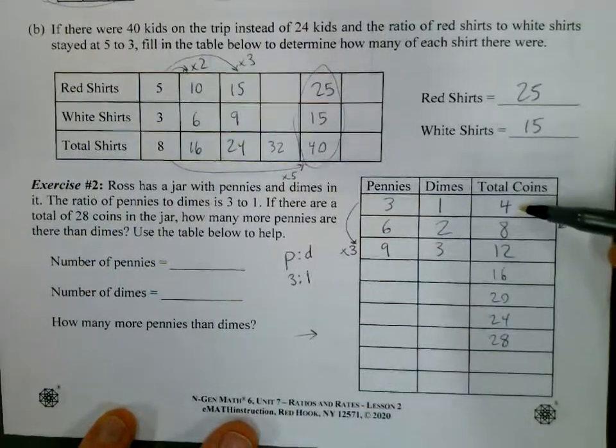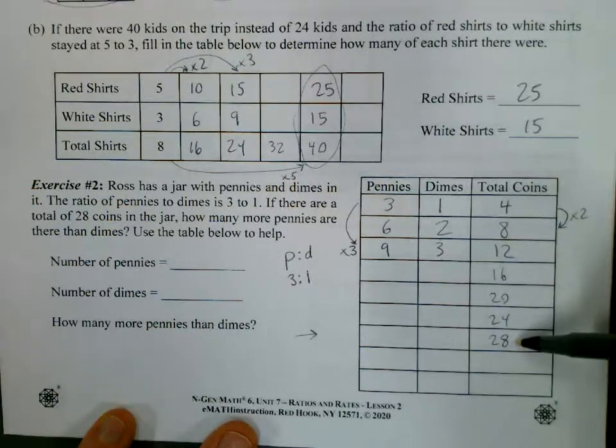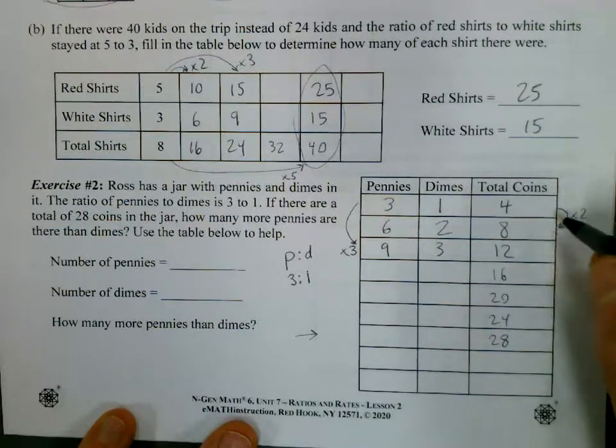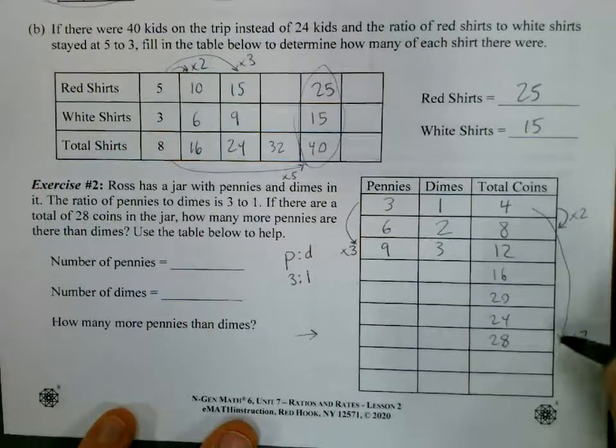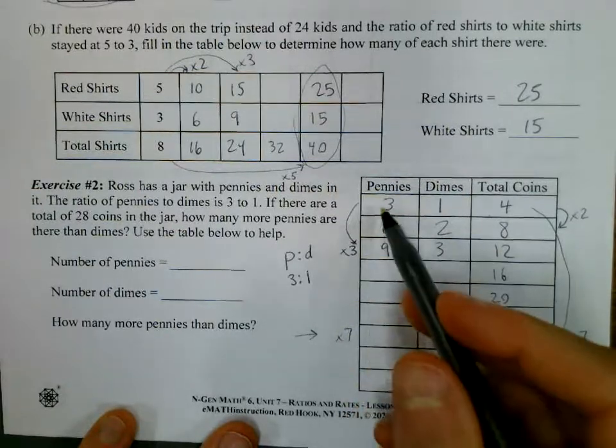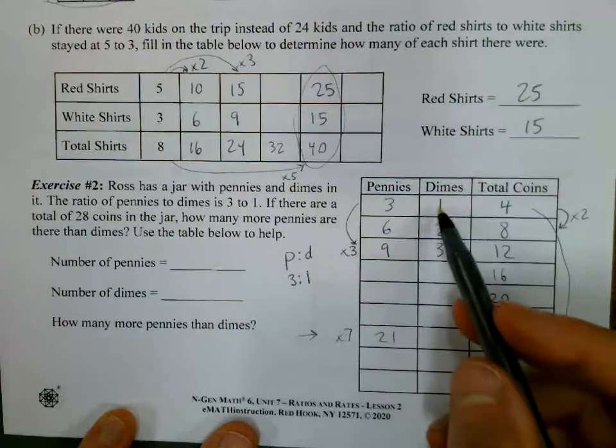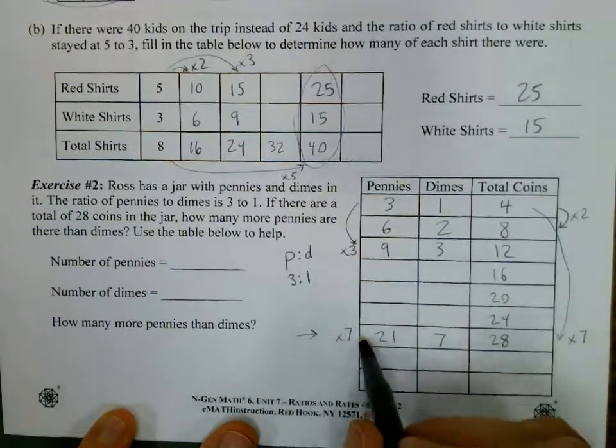So I could say, well, how do I get from four to 28? Four times what is 28? If you know your times tables, you know that's four times seven. So this row here is seven times the first row. So let's put a times seven there. So the number of pennies will be three times seven. That's 21. Number of dimes, one times seven. That's seven. And there we go. That's the information we're looking for.